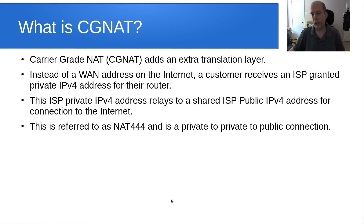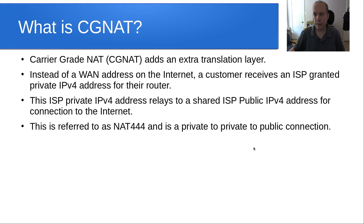This is referred to also as NAT444 because it is a private-to-private-to-public connection, which basically means that if you're on a system behind a CGNAT, that system is the first private address, the second private address is the address your router gets, and the third address is a public connection off to the public internet.